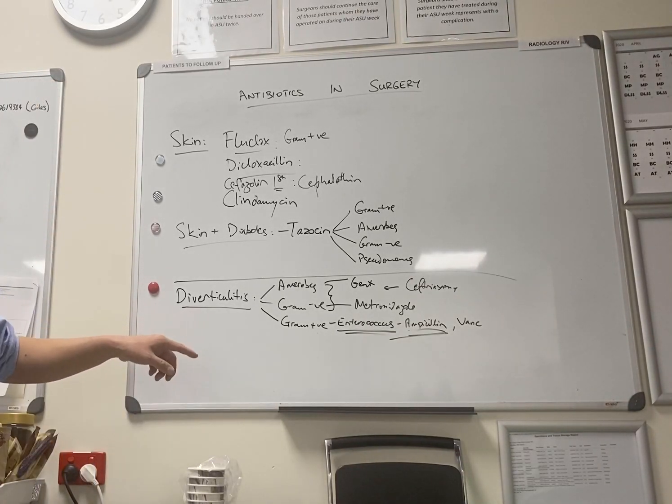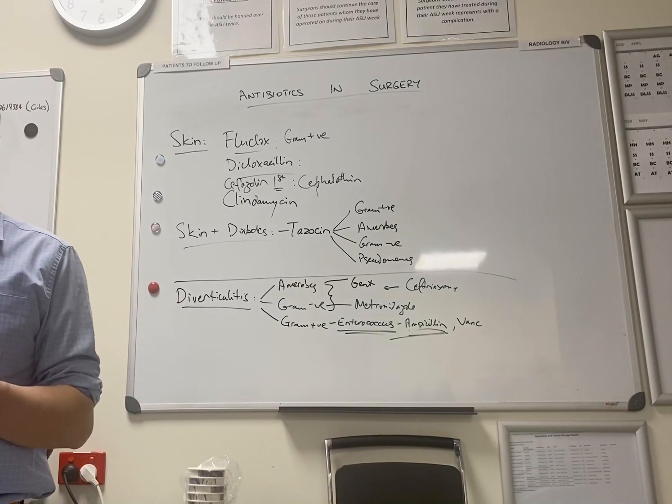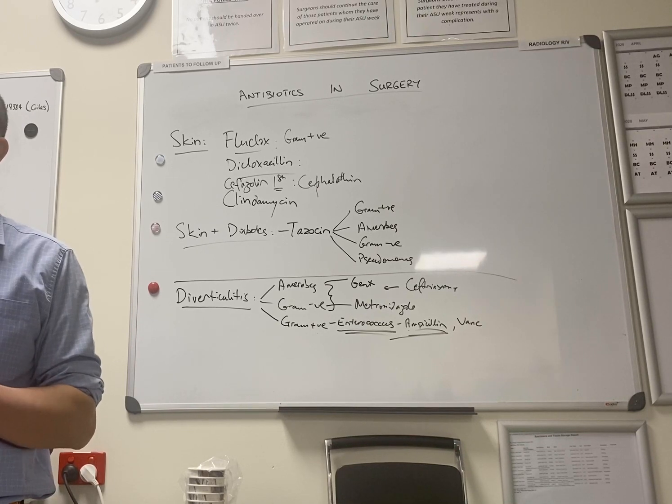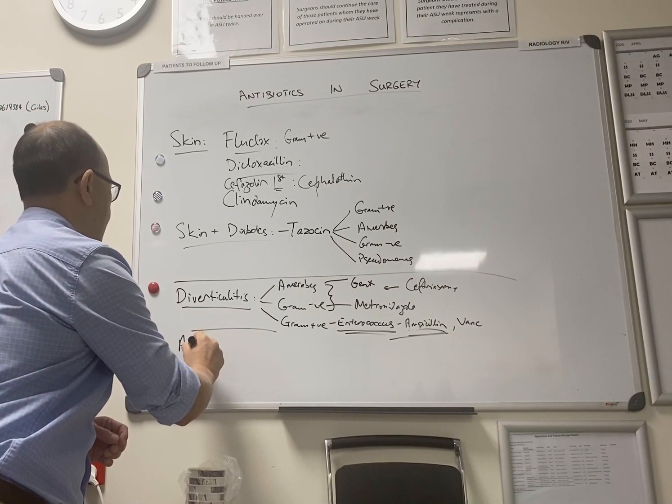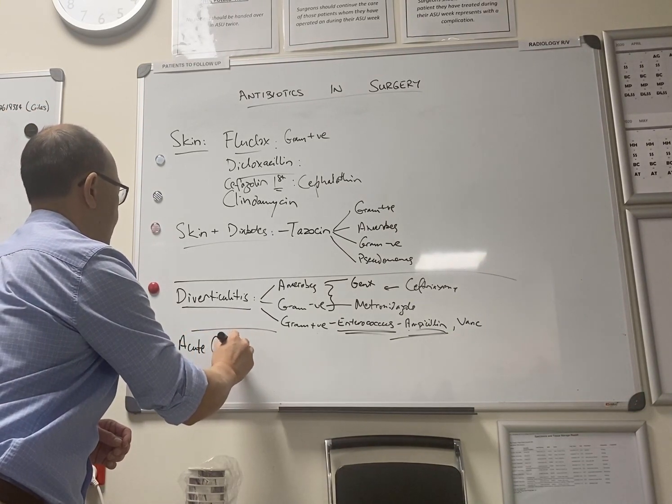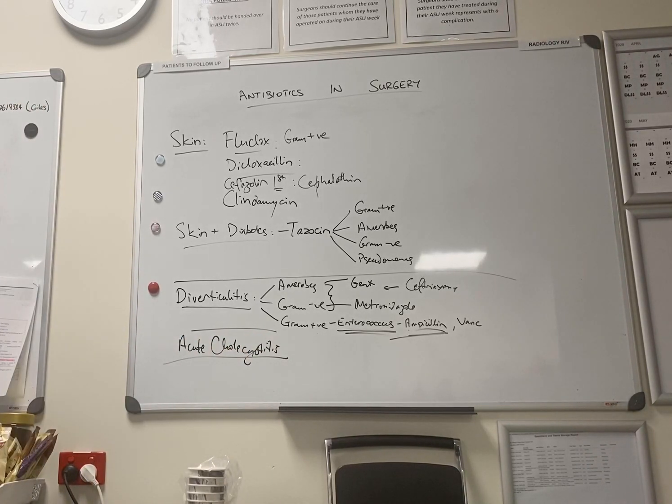Alright. Now, in terms of intra-abdominally, what we give to diverticulitis is very similar to what we give to other conditions in the abdomen. Acute cholecystitis, what's the guidelines there? Not metronidazole? Yeah. Look, you're right. The guidelines sort of change a little bit from time to time. But generally, if it's your first attack, they generally recommend that you don't necessarily have to cover for anaerobes. Just ampicillin and gentamicin or ceftriaxone alone.